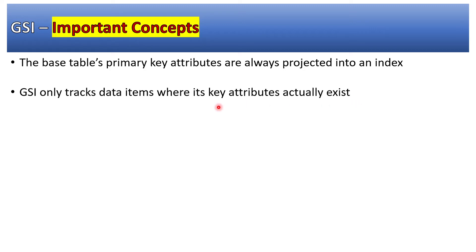For example, if you have defined a partition key and sort key for a GSI, and while inserting a record into the base table you do not include values for that GSI's partition key or sort key, then the GSI write will not happen because there is no partition key or sort key available in that record. I have also provided a table showing when a GSI write or read will happen and how much it costs.